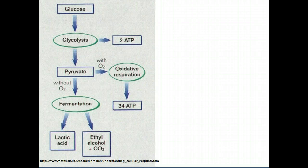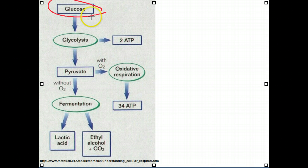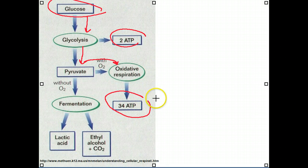Let's think about these microorganisms. In the presence of oxygen, these microorganisms can undergo aerobic cellular respiration. When these microorganisms take in glucose, glucose will go through glycolysis and generate some molecules of ATP. Glucose will then be converted into pyruvic acid or pyruvate, further oxidized by the Krebs cycle — first the intermediate step, then the Krebs cycle, the electron transport chain, and chemiosmosis — so that it can generate 34 molecules of ATP.